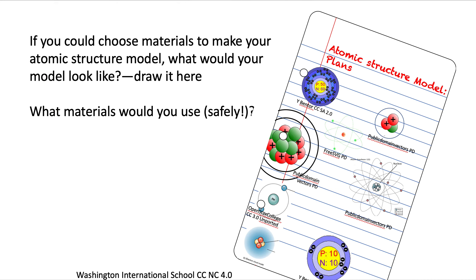If you could choose your own materials to make a second atomic structure model of the same element, what would your model look like? Make a drawing of it. What materials would you use, and make sure you do so safely?